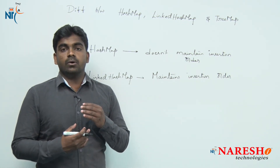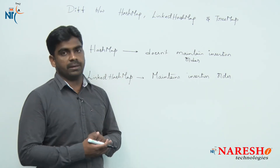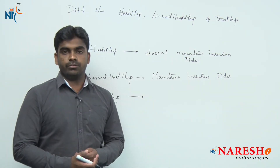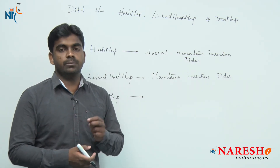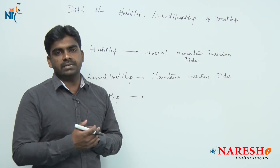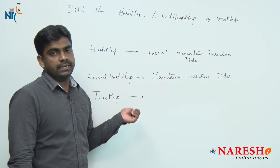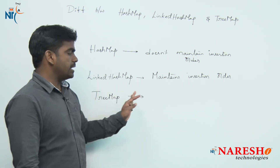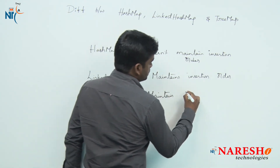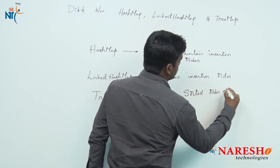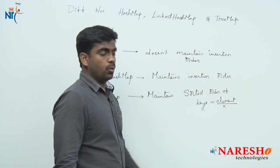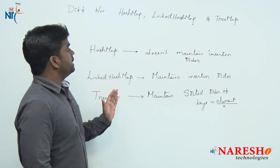If you want to maintain all the elements in ascending order, we should go for TreeMap. Whenever it maintains ascending order of elements, it will maintain the keys, not the elements directly. The key is associated with the element, so TreeMap maintains sorted order of keys, and of course the key is associated with the element. Elements are not in sorted order — only keys are in sorted order.